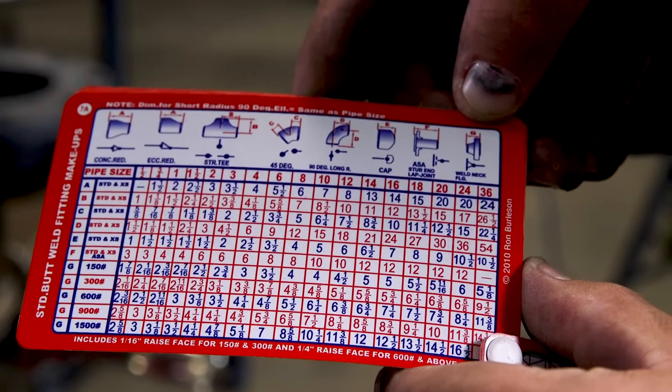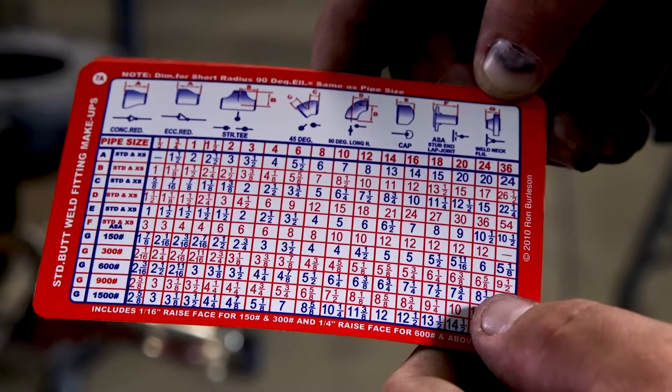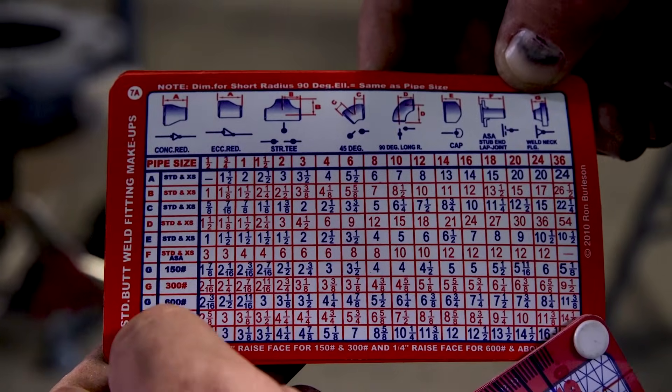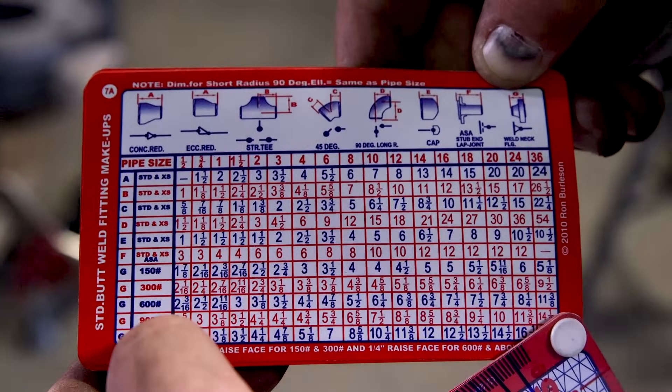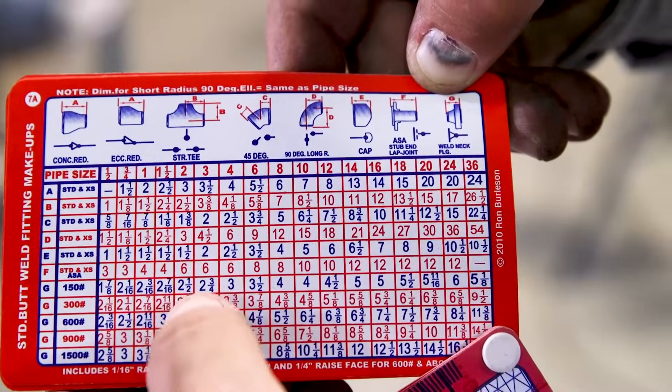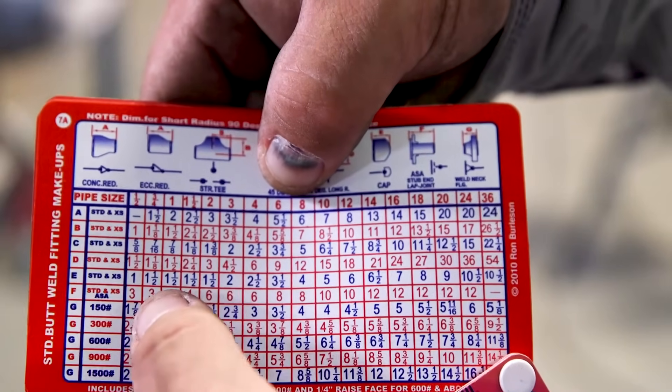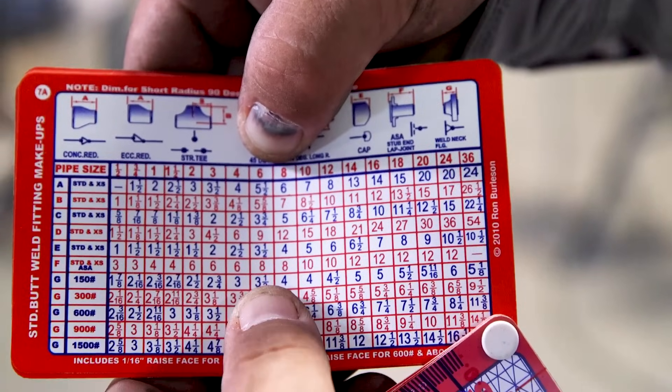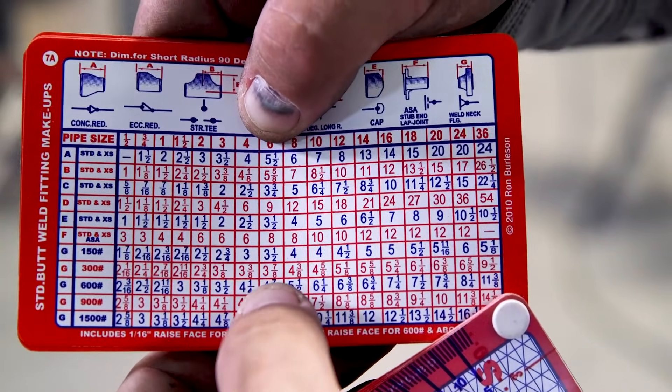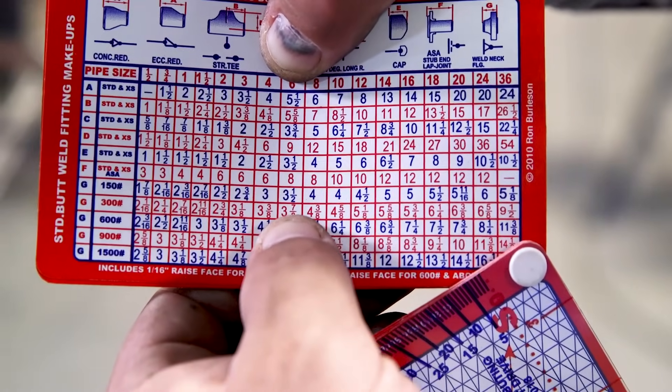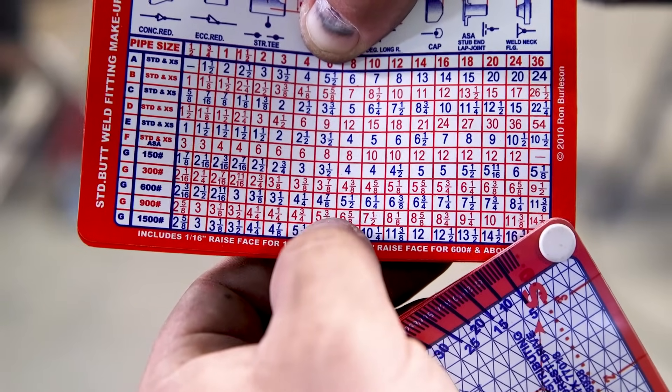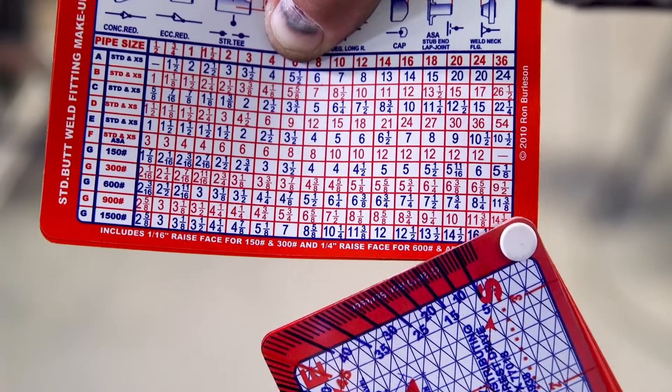Alright, so we go here to G, which is our weld neck flange here. And you see here, we have all the G's on the bottom here, showing all the different classes. We're going to go with our first one, which is the 150. We're going to go down to our pipe size, which is 3.5 inches. And as you see, if we jump up to a 300, which is right below it, the takeoff there is 3 and 7 eighths. And as the rating goes up, the flange takeoff gets larger and larger.